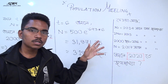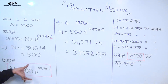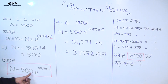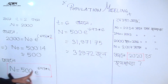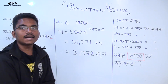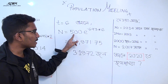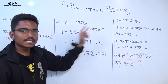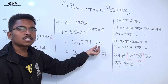If you read the question, n is equal to 0.693 into t. If you read the question, t equals to 6. So n is equal to 0.693 into 0.693 into 0.693. The answer is 31971.